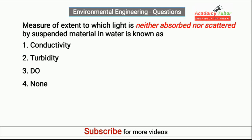Measure of extent to which light is neither absorbed nor scattered by suspended material in water is known as? Answer is Turbidity.